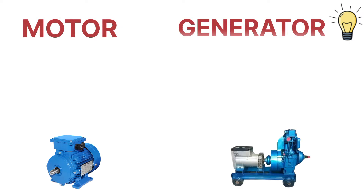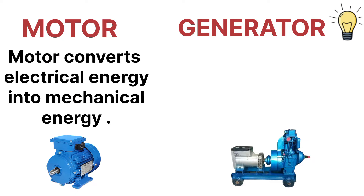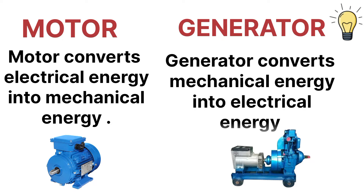First of all, let's see what are the main differences between the motor and the generator. The motor converts electrical energy into mechanical energy — if we supply electrical energy at the input section of a motor, it is converted into mechanical energy. But in the case of a generator, the conversion is the reverse — it converts mechanical energy into electrical energy.